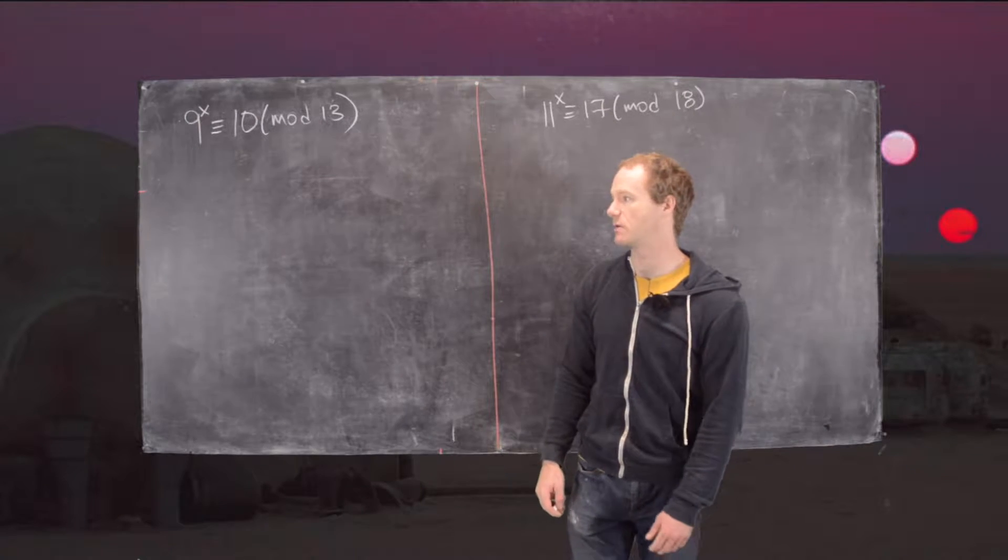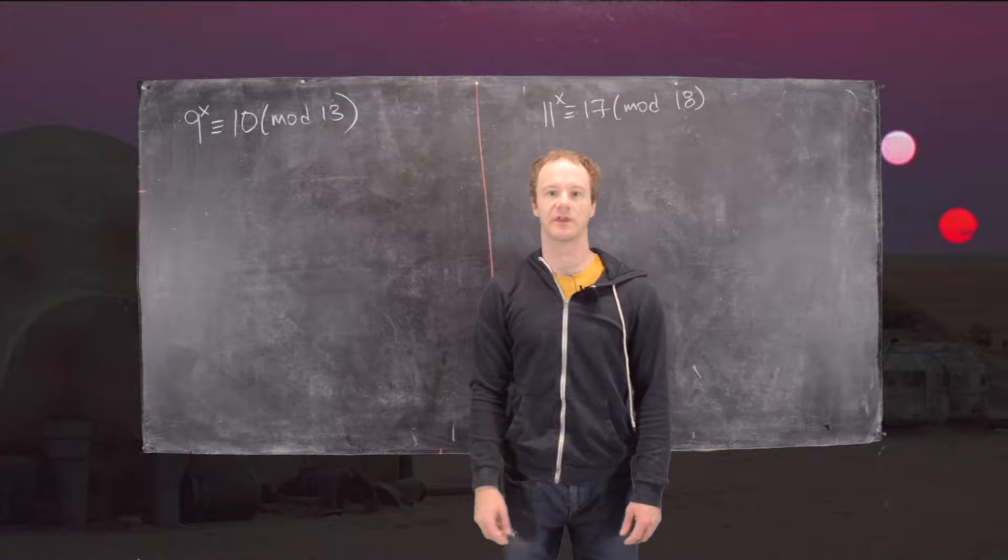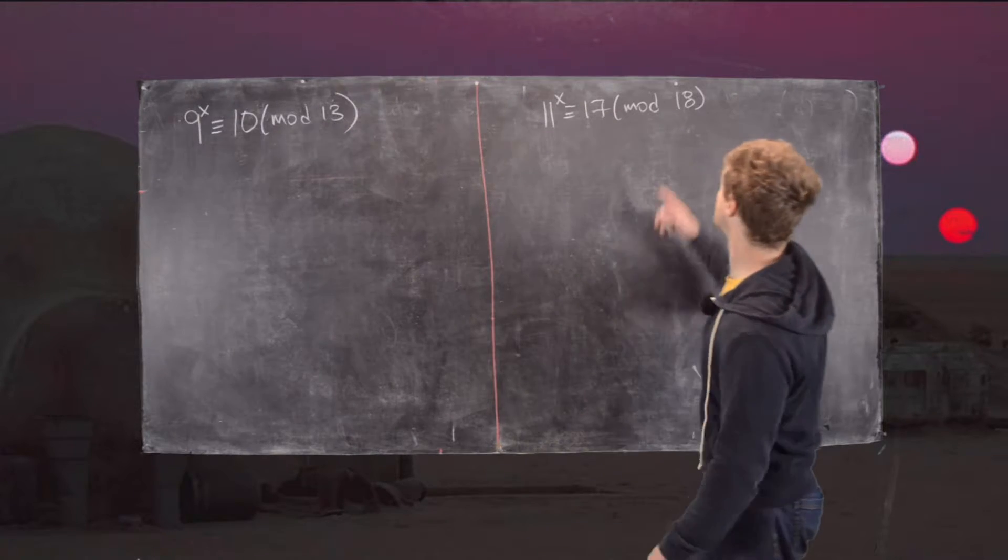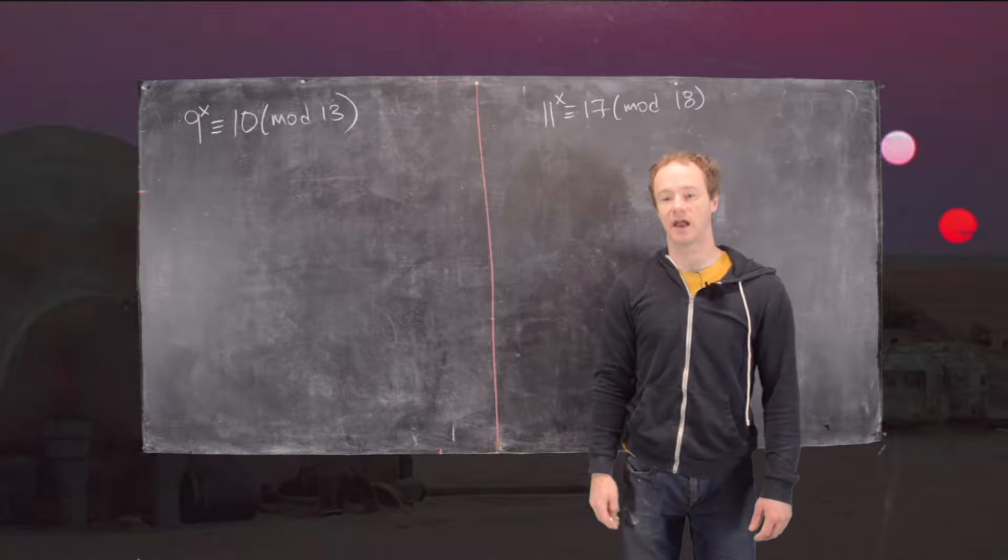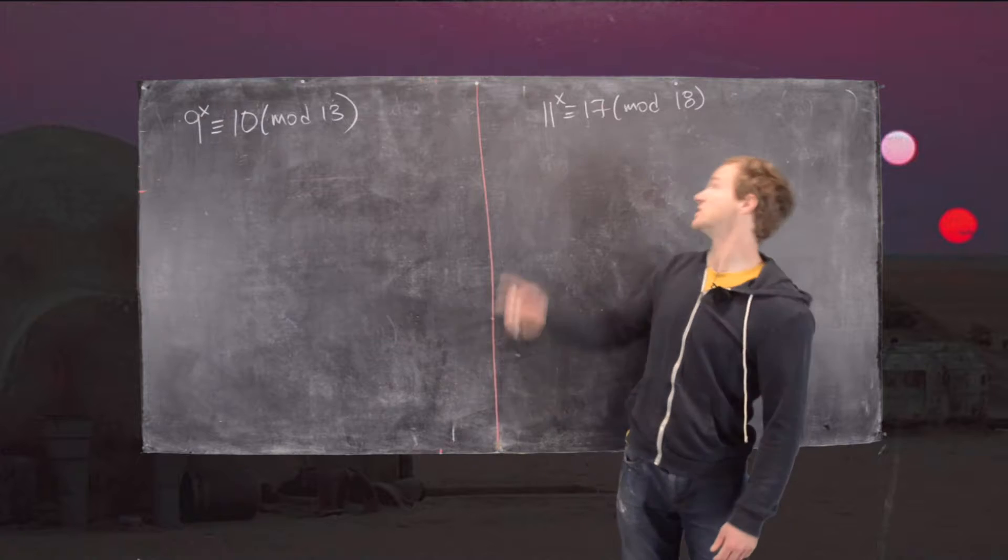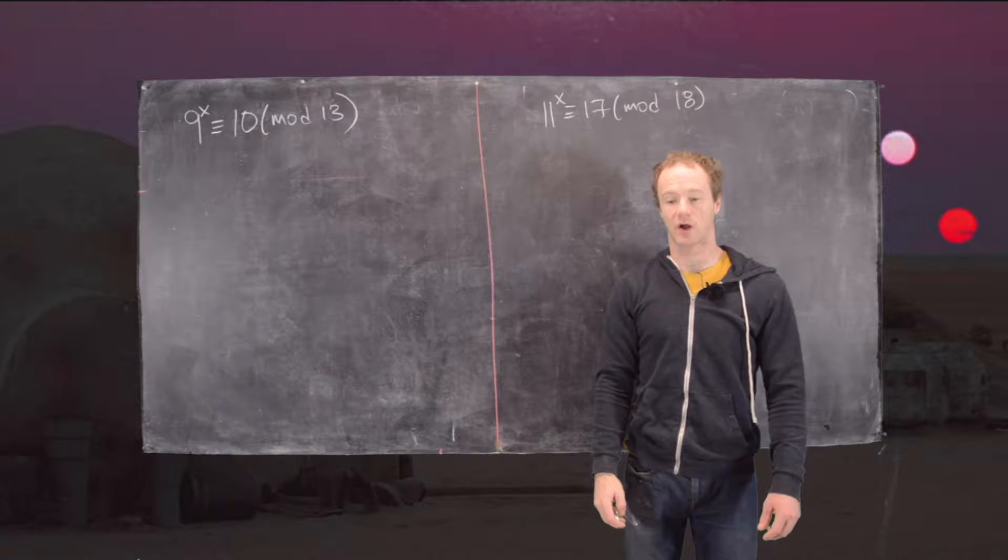Before we get started, we're going to use the method of primitive roots. Since 13 is prime we know that there is a primitive root, and since 18 is twice the power of an odd prime, that also has a primitive root.